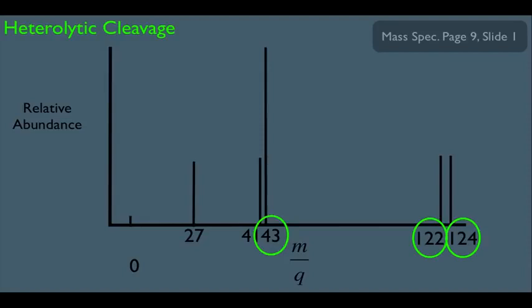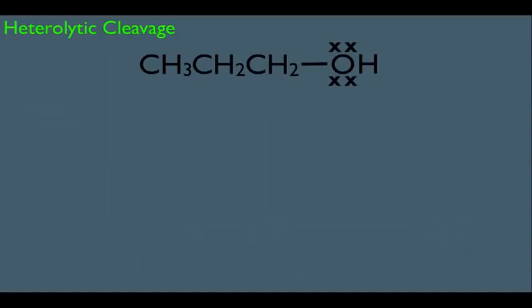There's also an M+2 peak due to the Br isotope at 124. So alkyl halides can cleave heterolytically — another way these molecules can crumble in the mass spec.